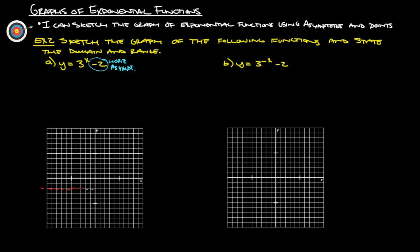That means the graph is going to get really close to that line but is never going to actually hit that line — it can get really close but will never touch it.